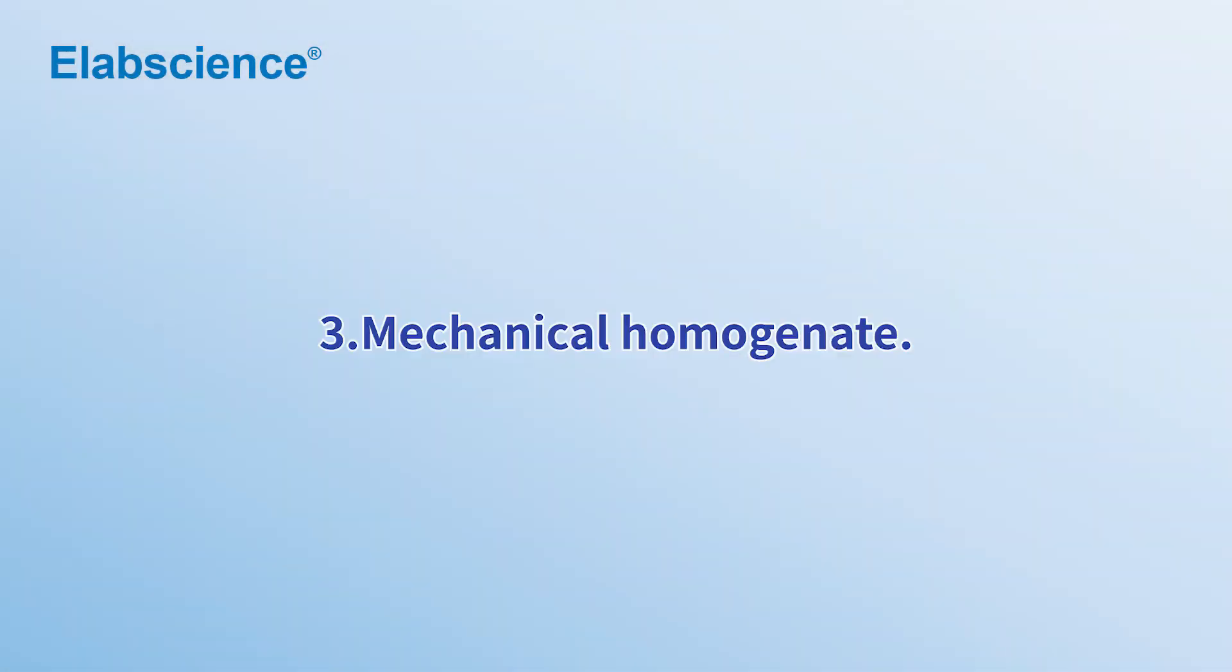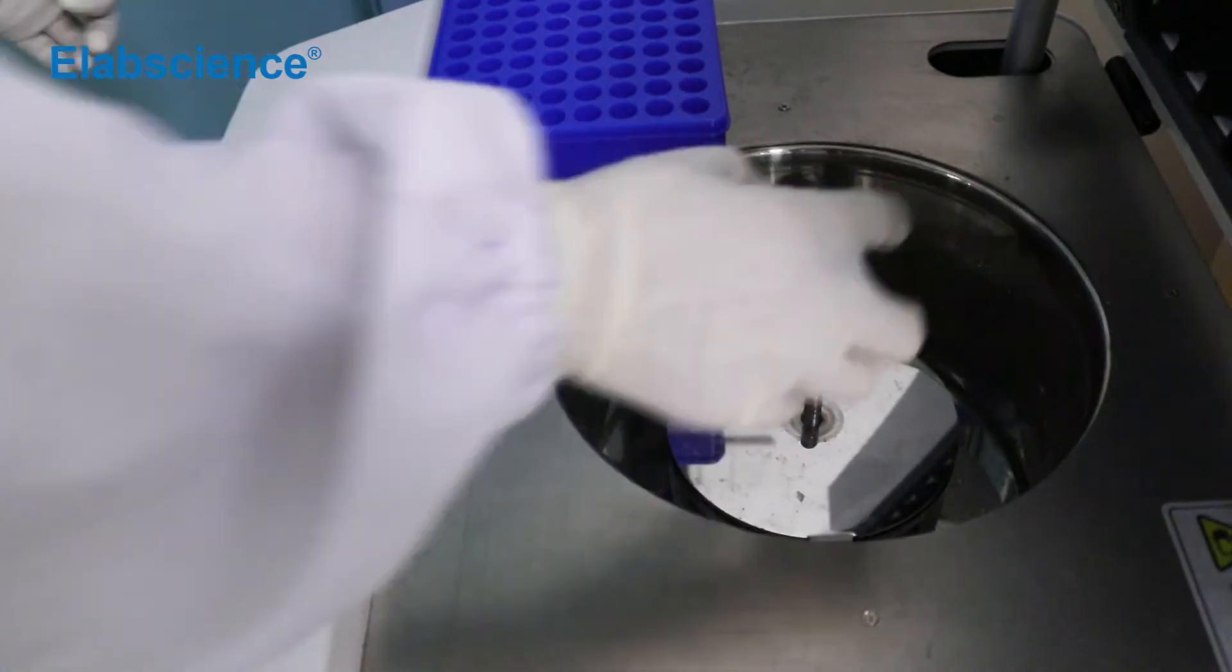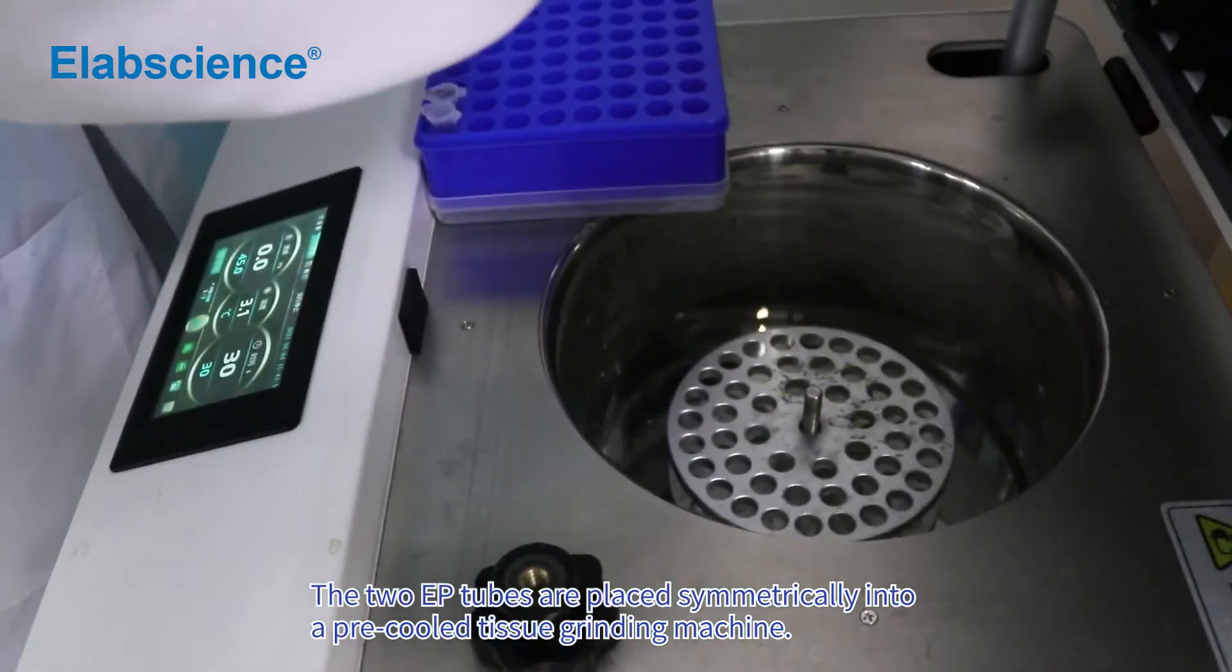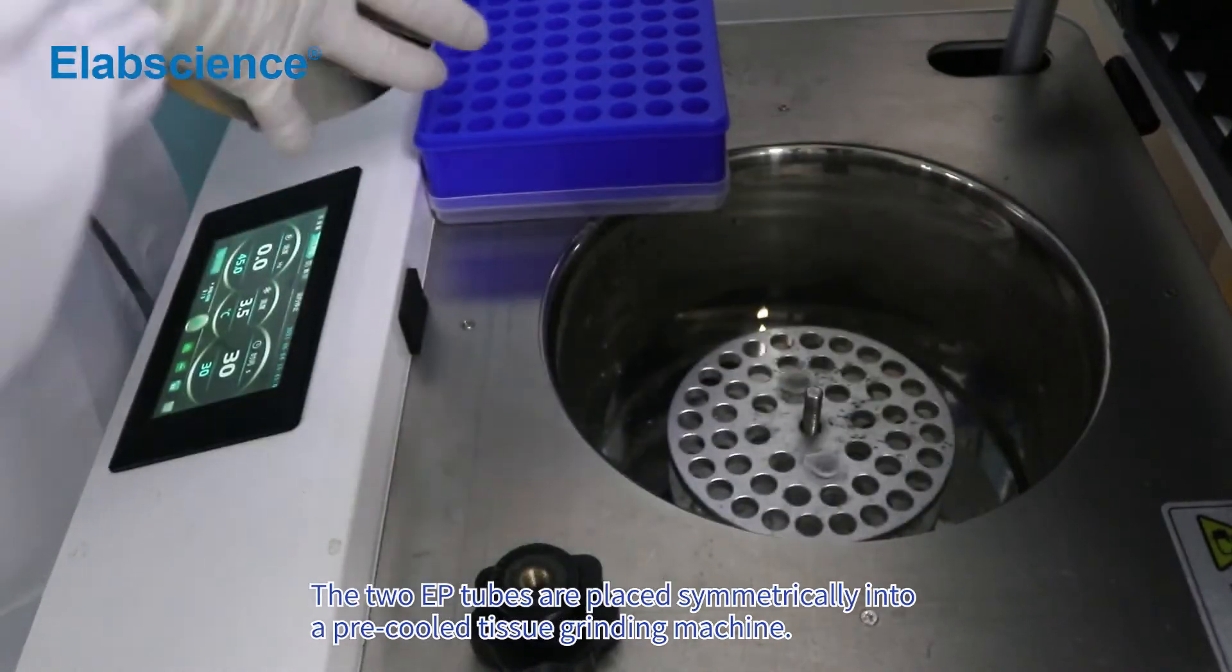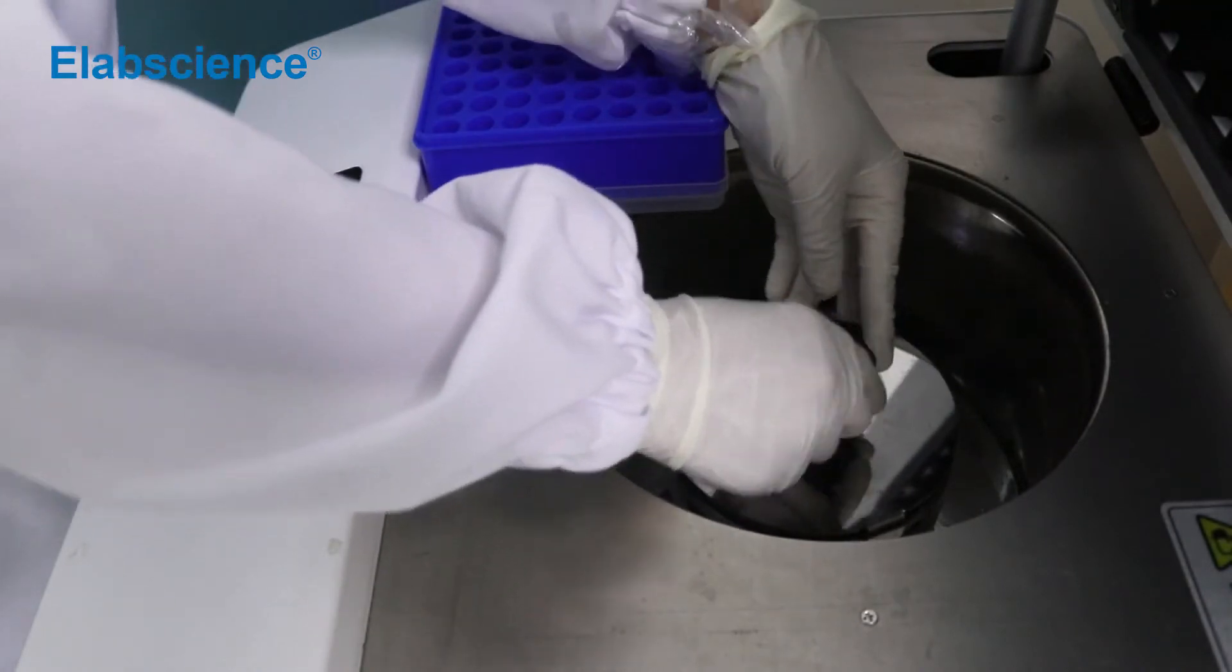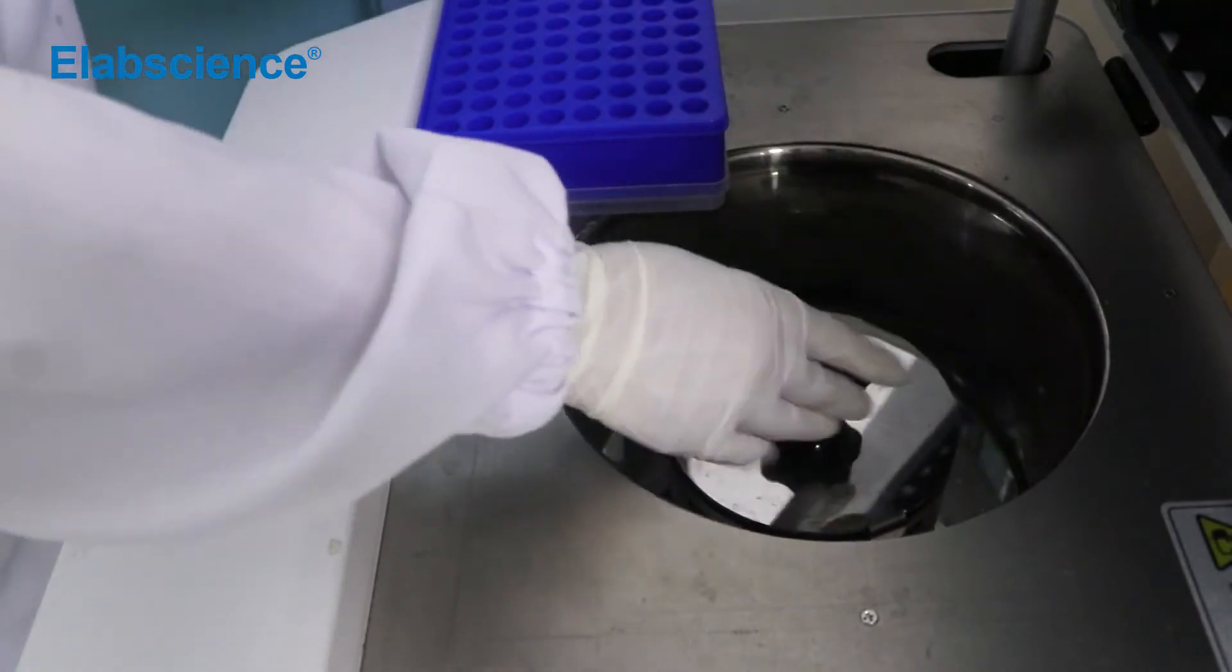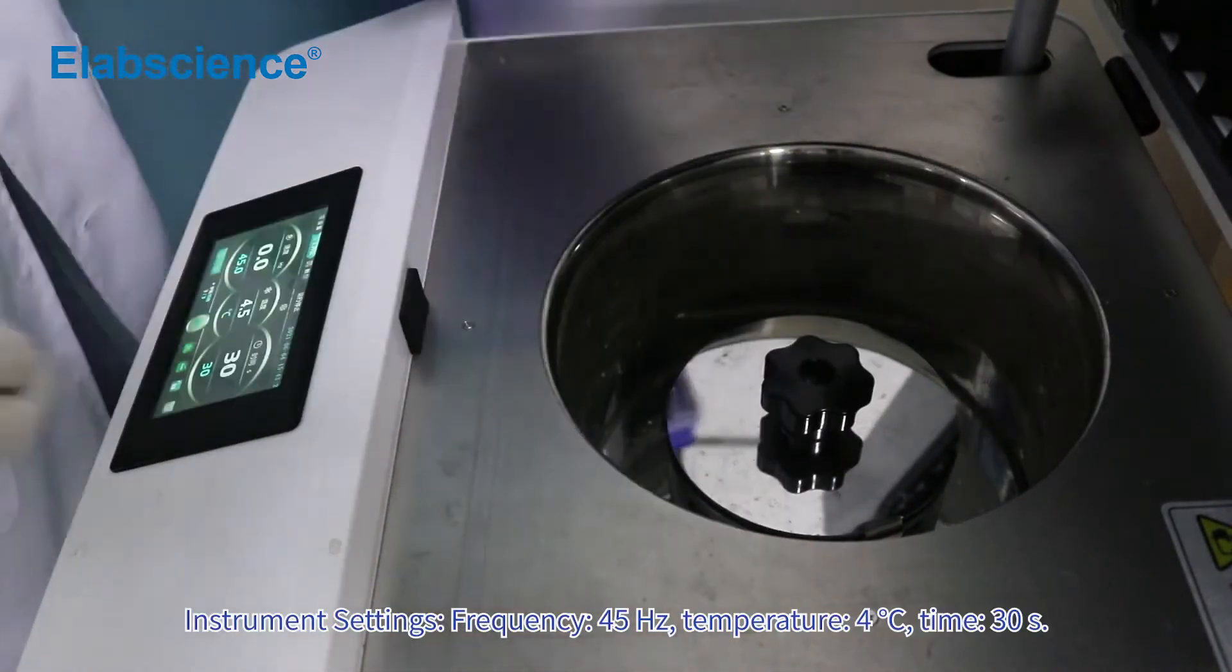Mechanical homogenate. The two EP tubes are placed symmetrically into a pre-cooled tissue grinding machine. Instrument settings.